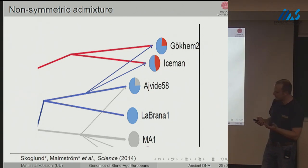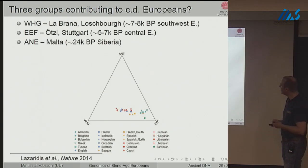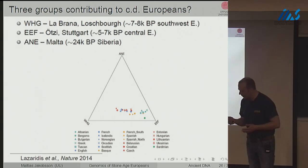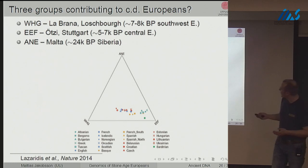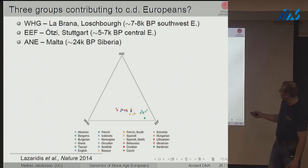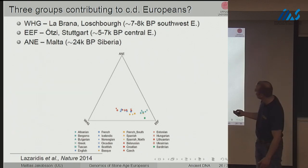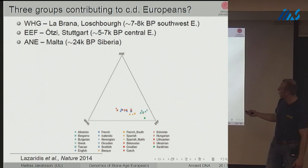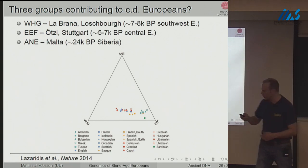Johannes will speak more about the next plot — from his paper — but I'll note that you again see the same gradients: representation of affinities to farmers on one axis, hunter-gatherers on another, with modern-day groups from the south drawn toward farmers and those from the north drawn toward hunter-gatherers. Johannes will also discuss a third ancestry component that represents perhaps 5–10% of the ancestry of modern-day Europeans.